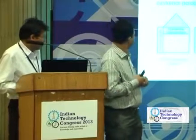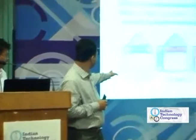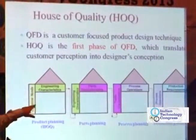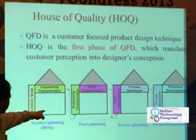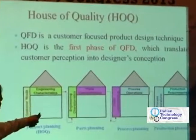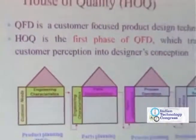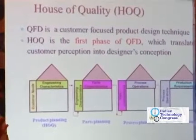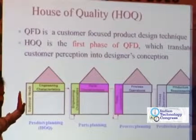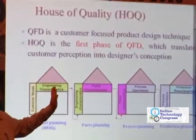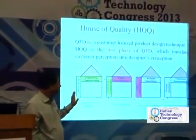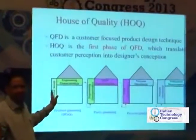This is the House of Quality. QFD is a customer-focused design technique and has four phases. The first phase is the House of Quality, which deals with customer needs and engineering characteristics. The output of the first phase feeds into the second phase — parts planning — and that output goes to process planning, whose output goes to production planning, which is the final product output. In this paper, we have concentrated only on the first part. If you carry out all four processes with full case studies and analysis, it may amount to a PhD-level work.